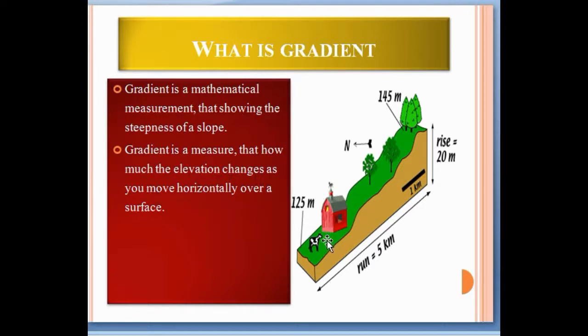See here, this is a terrain. Suppose we want to hike from this point to this point. The elevation of this point is 125 meters and this point is 145 meters, so the total elevation change is 20 meters. But the distance is 5 kilometers. So this is the difference, or this is the gradient.